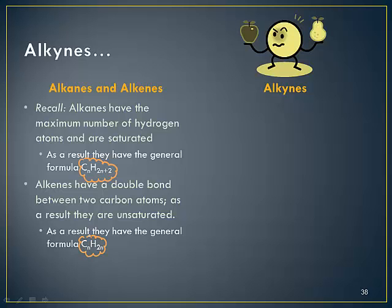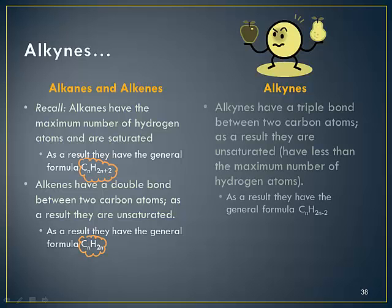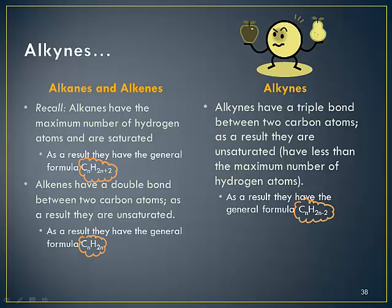Now let's look at alkynes. Alkynes have a triple bond. Because they have a triple bond, they have less than the maximum number of hydrogens attached, and they must be unsaturated. What we see is they have the general formula CnH2n-2.